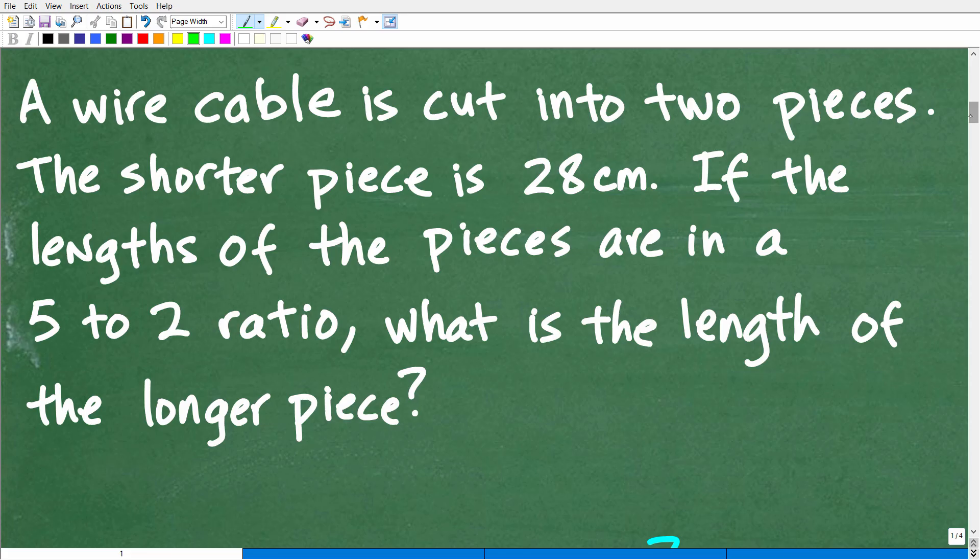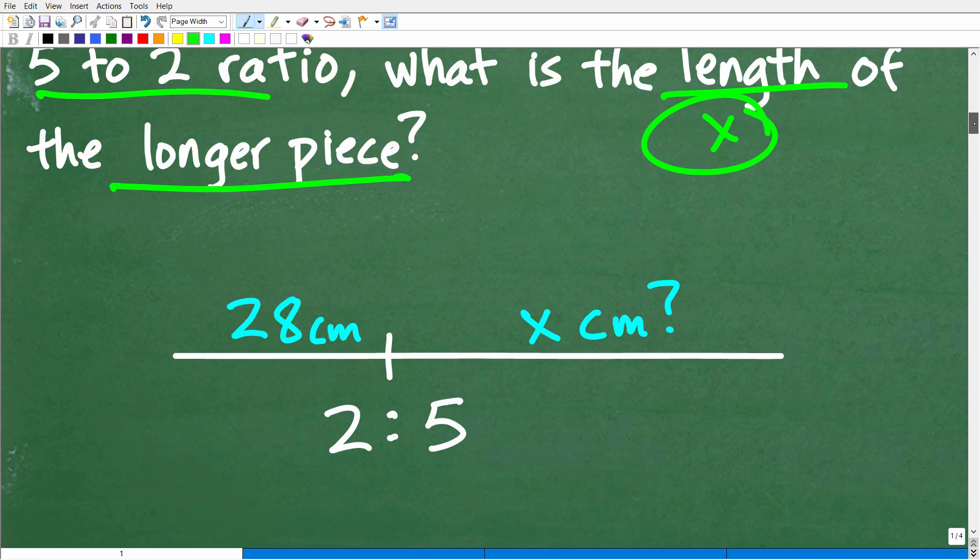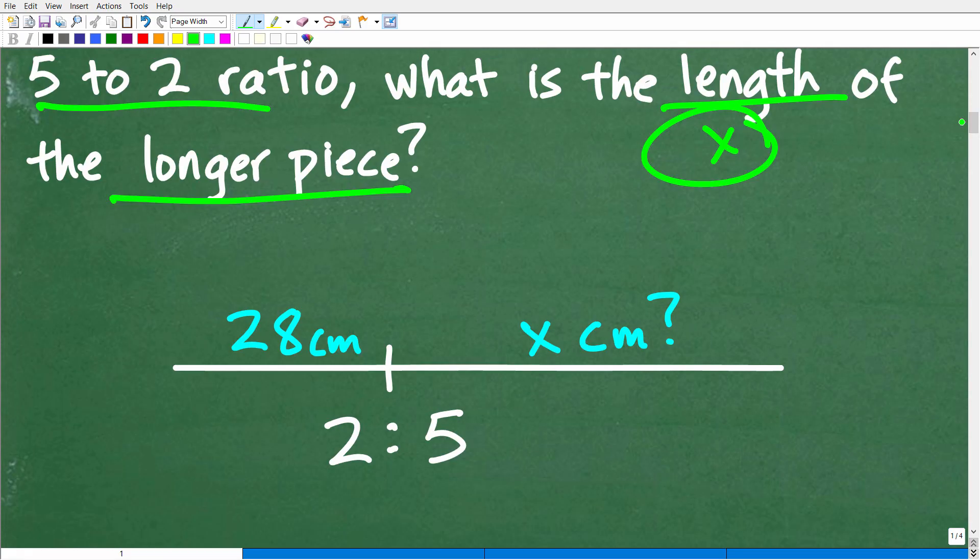And the best way to model a problem like this is to visualize it. So let's go ahead and visualize what's going on. We have this cable and we have two pieces of this cable. We cut this into two pieces and the shorter piece is 28 centimeters, and we have this ratio of 5 to 2, and we're looking for the length of the longer piece. So our unknown value here is the length of this longer piece. Let's use a variable like X to represent the length of the longer piece.